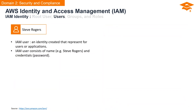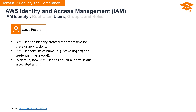An IAM user is an identity created to represent either users or applications within the AWS environment. Each IAM user is characterized by a name, for example Steve Rogers, and a set of credentials, typically in the form of a password. By default, newly created IAM users have no initial permissions associated with them, meaning they start with a clean slate in terms of access rights.